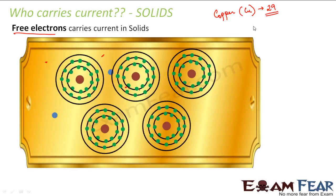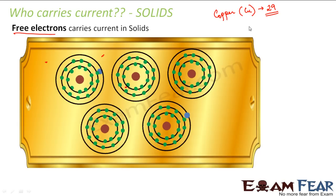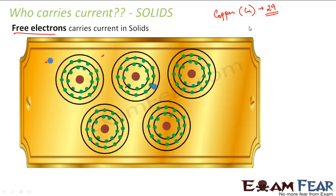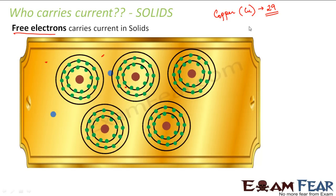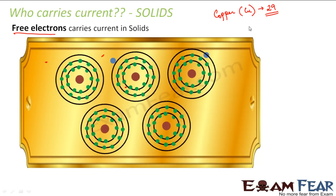So if the atomic number is 29 and if you write the electronic configuration for copper, what do you see? You will see that there is one electron in the valence shell. What is valence shell? Valence shell is the outermost shell of the atom. So in the outermost shell there is only one electron in case of copper.